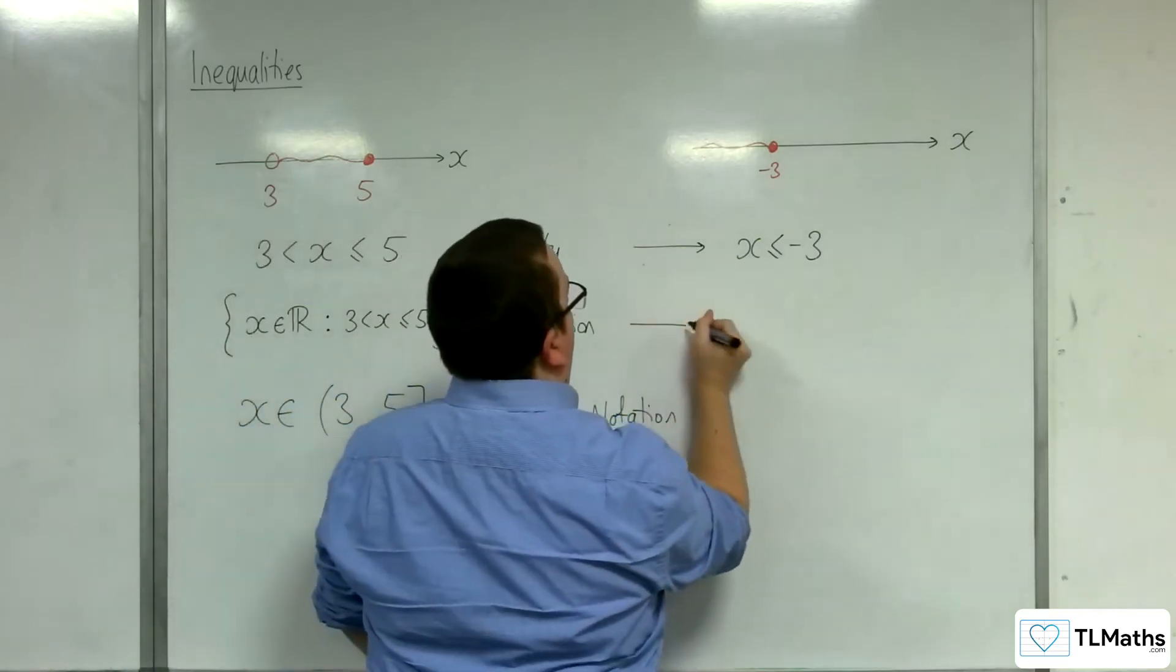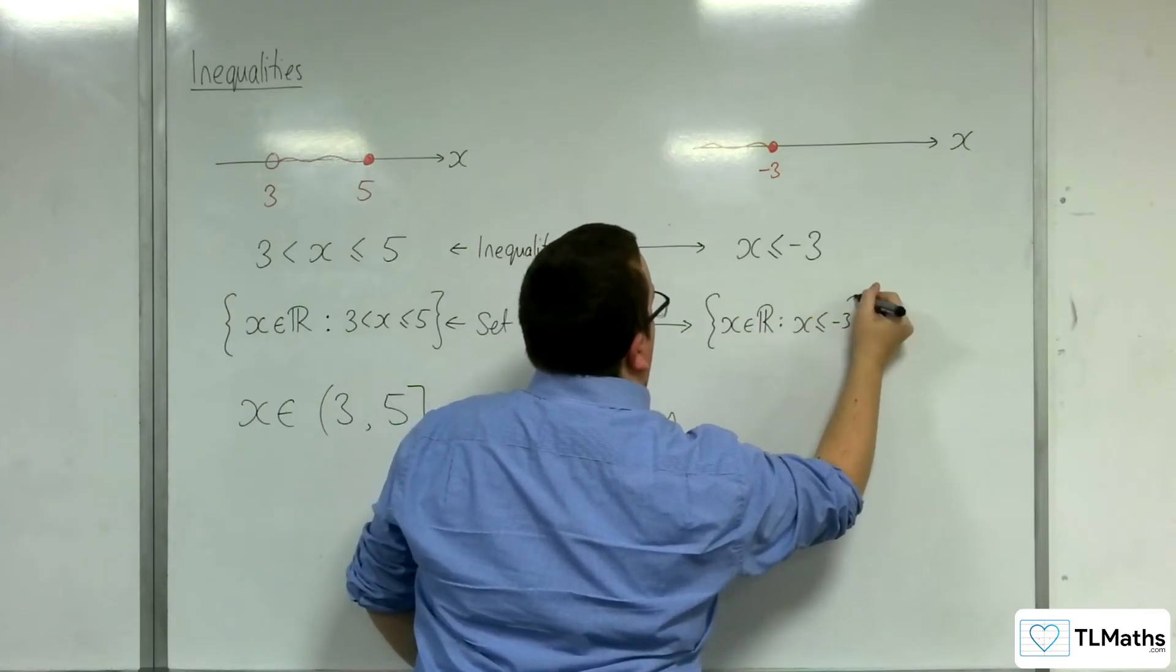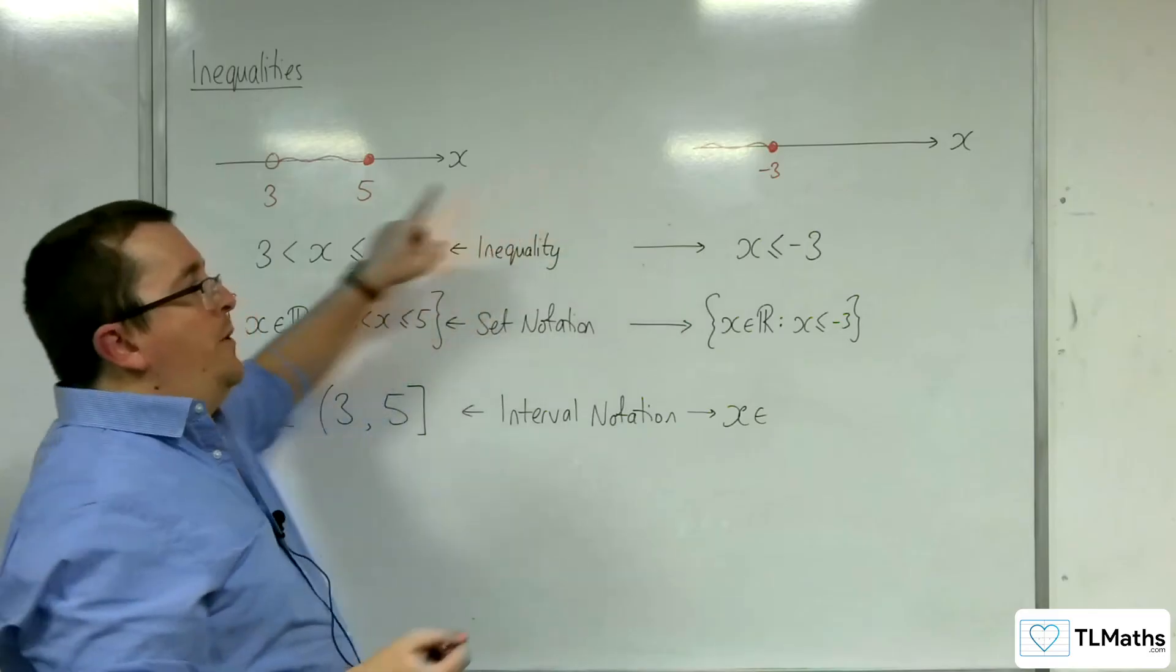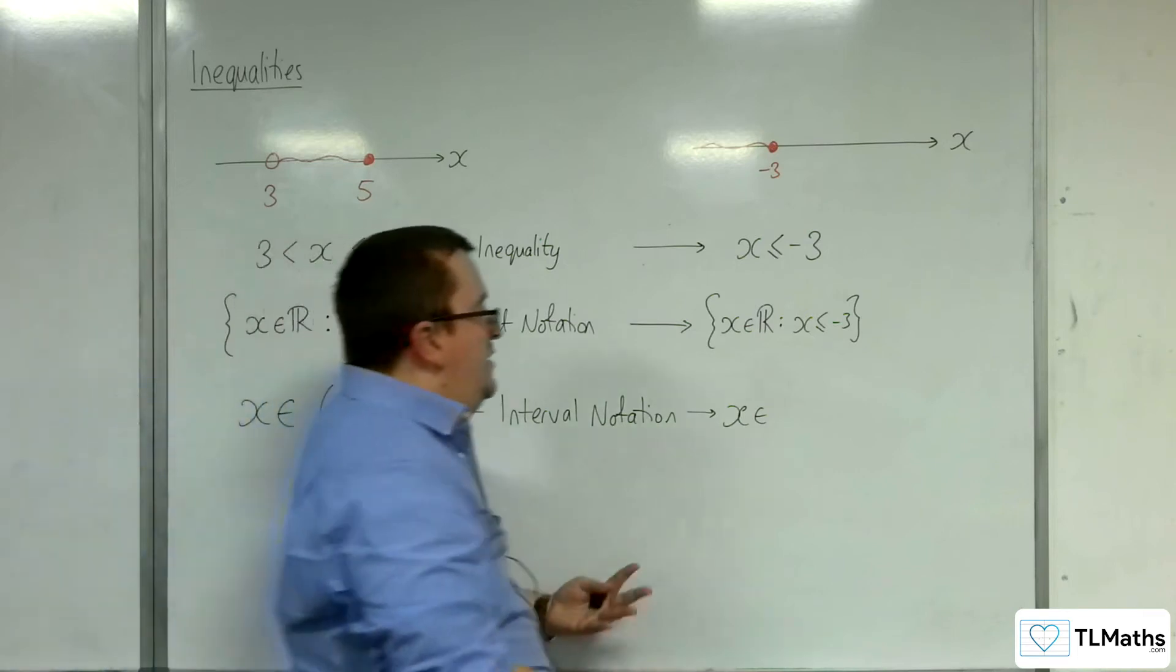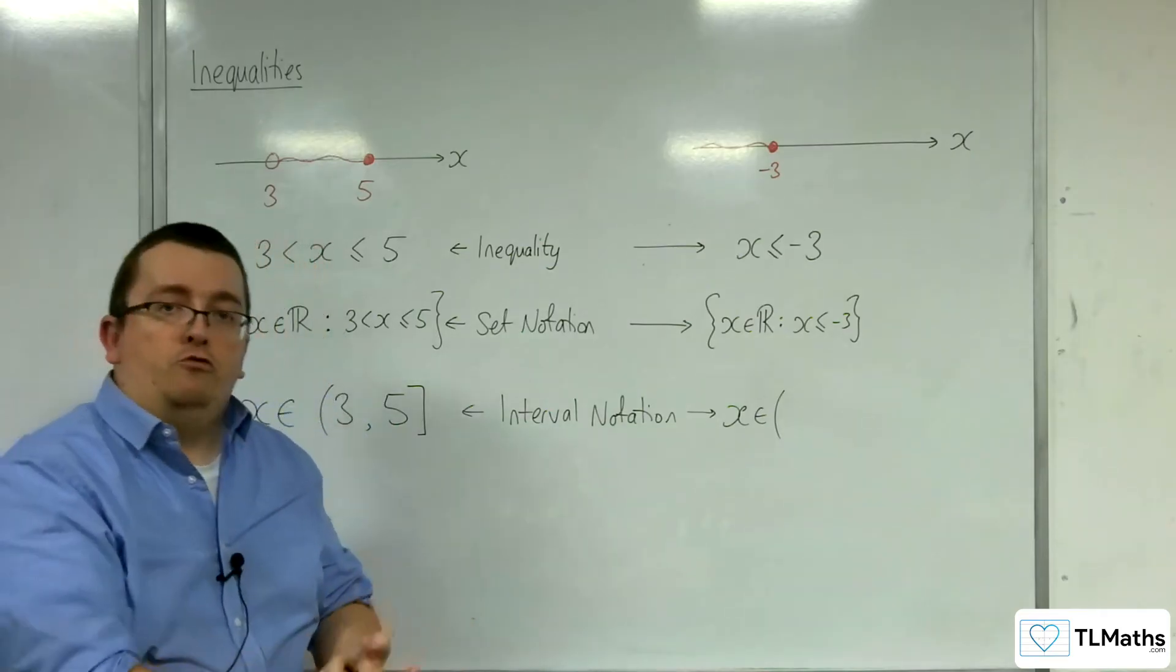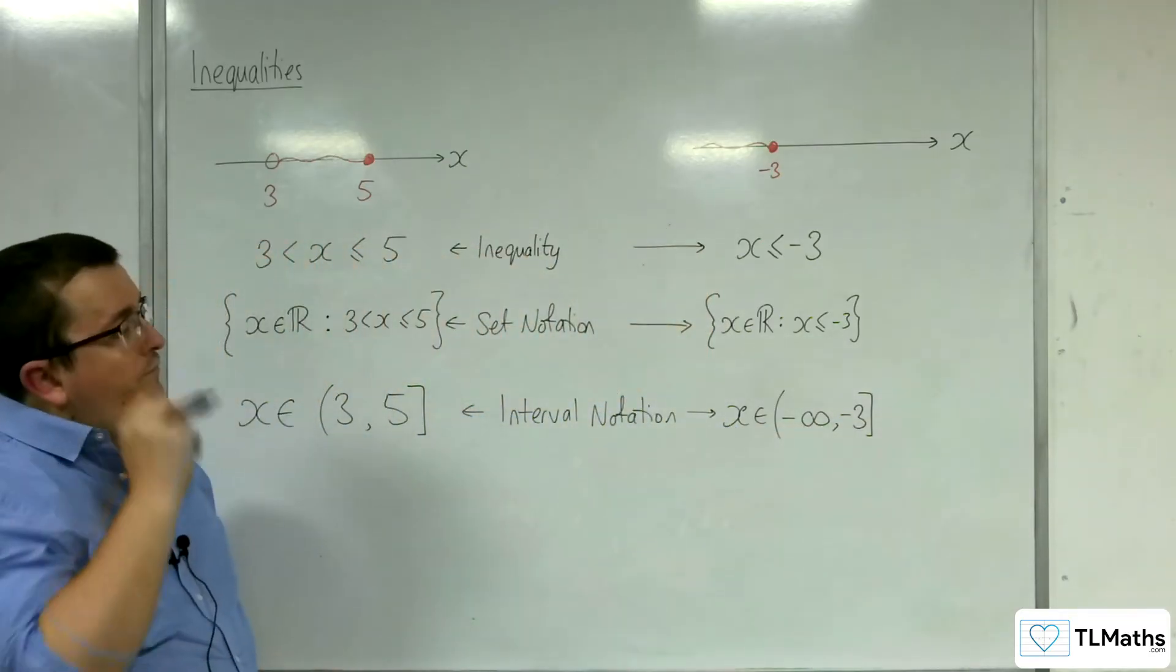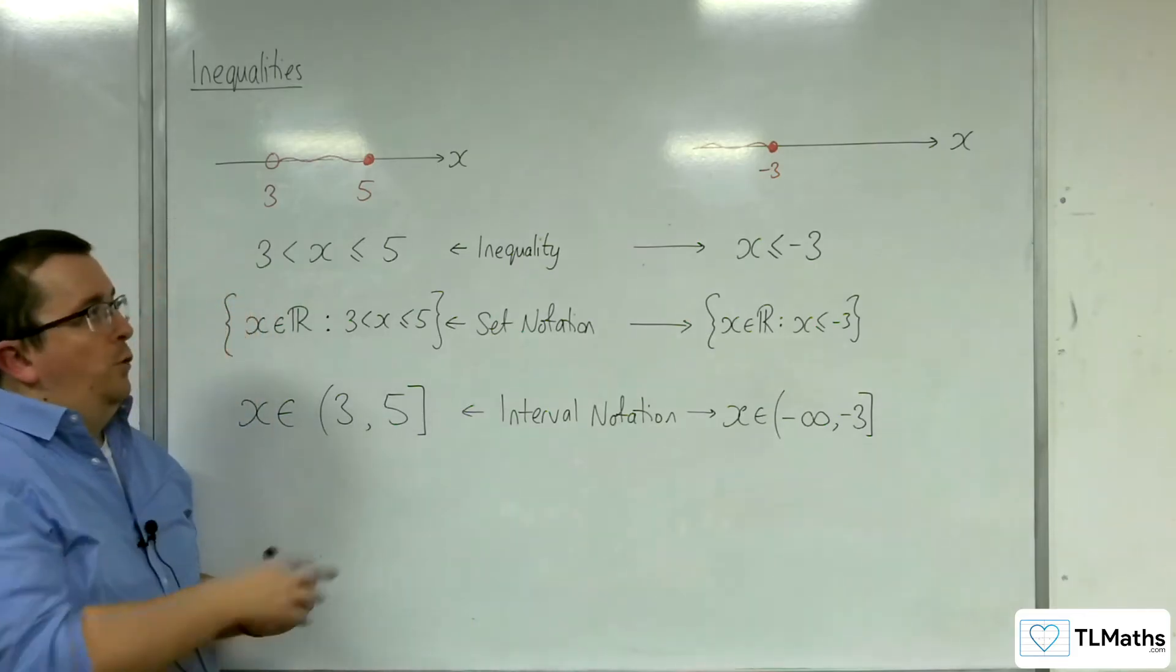For set notation, we would be saying that x belongs to the real numbers, such that x is less than or equal to minus 3. And for interval notation, this is where it gets a little bit more interesting. As it keeps on going on forever and ever, you are going towards negative infinity. In interval notation, we will have to use a curved bracket, because infinity is not a value that you can reach, or include. So we're going to say negative infinity up to minus 3, then square bracket. That is what the inequality set notation and interval notation would look like for that situation.